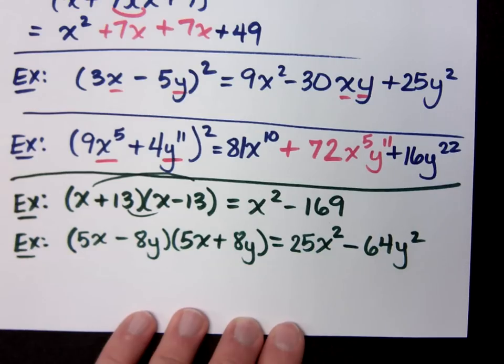And here's the thing. If we can multiply, then we can do the unmultiplication, which is called what? Factoring. Factoring.